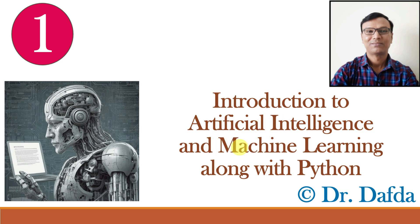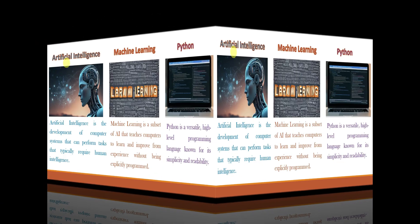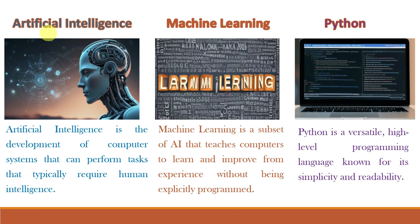In this subject, we will learn Artificial Intelligence and Machine Learning and also implement different algorithms in the Python programming language. Artificial Intelligence is like teaching computers to do things that usually only people can do — making computer systems smart enough to do tasks that need human-like thinking, like understanding language, recognizing patterns or making decisions. Machine Learning is like teaching computers to learn from examples or past experiences, figuring things out on its own. And Python is a flexible, easy-to-understand computer language, popular because it's simple to write and easy to read.